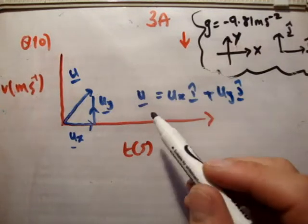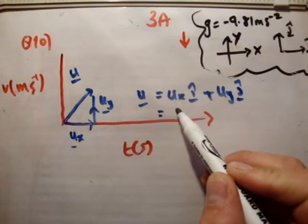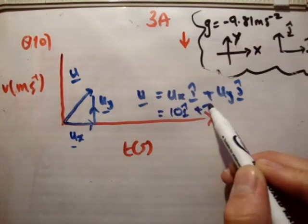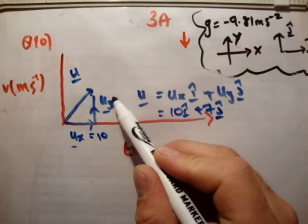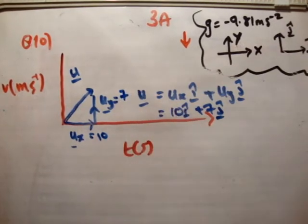Now, we're actually given that u is equal to 10 i hat plus 7 j hat. And as a result, u sub x is equal to 10, and u sub y is equal to 7. So we're already given that straight up, which is great.